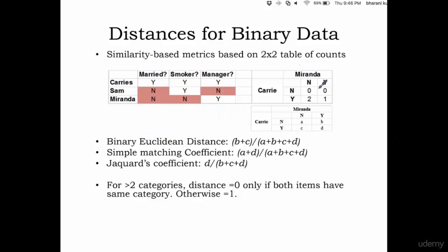So if you want for this dataset, Carrie and Miranda, if you want to calculate binary Euclidean distance, it is nothing but 0 plus 2 divided by 0 plus 0 plus 2 plus 1, A plus B plus C plus D. So the answer would be 2 by 3, which is 0.666. And if you want to calculate a simple matching coefficient, A plus D. A is 0 and D is 1. So it will be 0 plus 1 divided by 0 plus 0 plus 2 plus 1, and you get 1 by 3, which is 0.33.